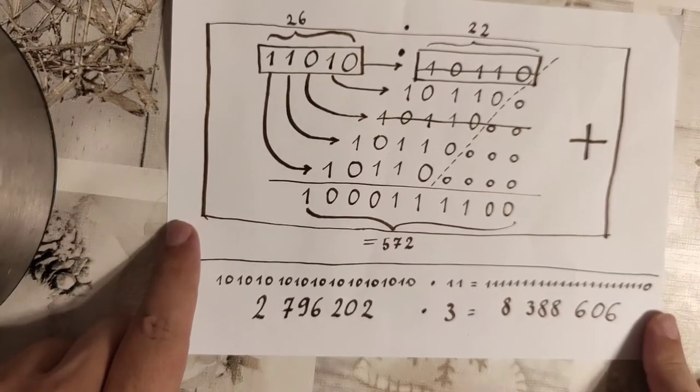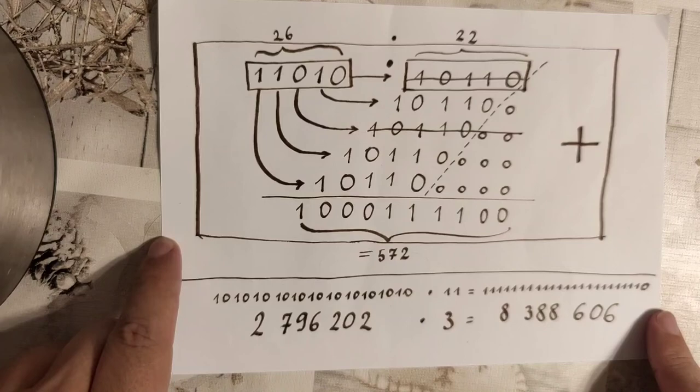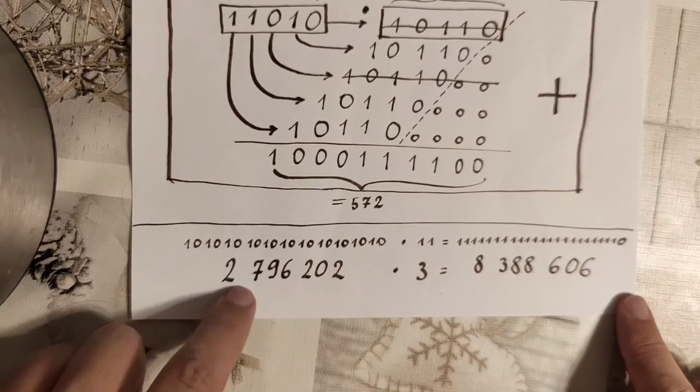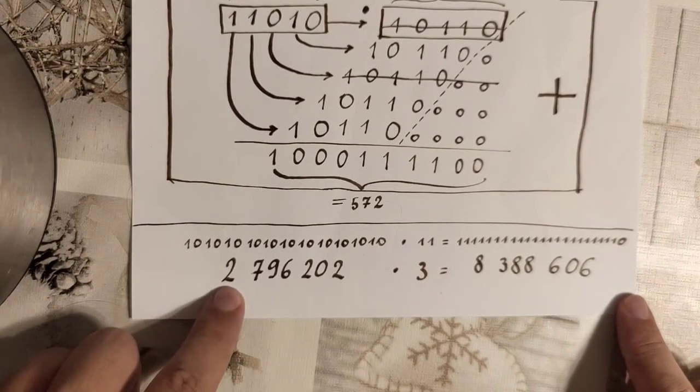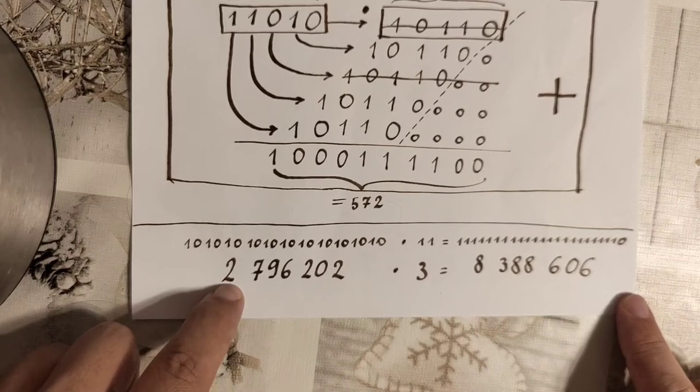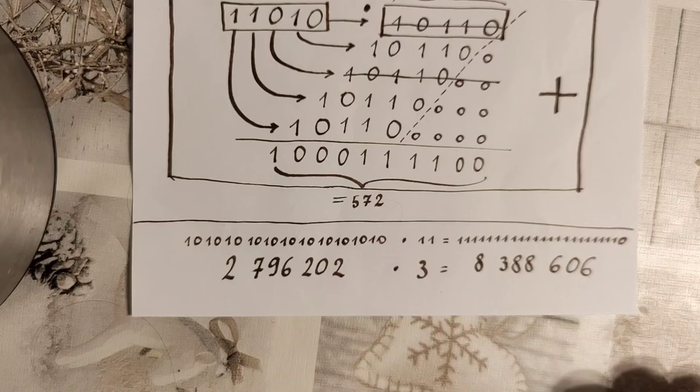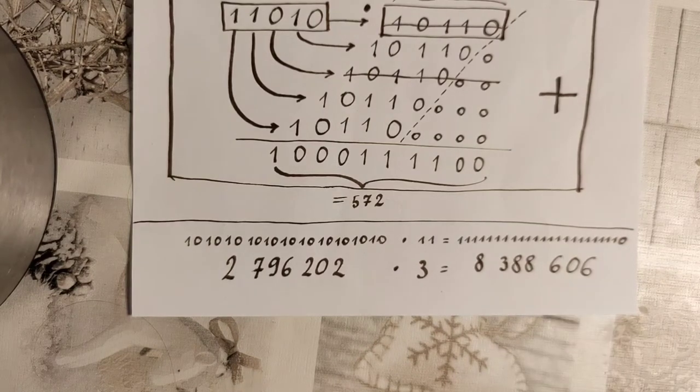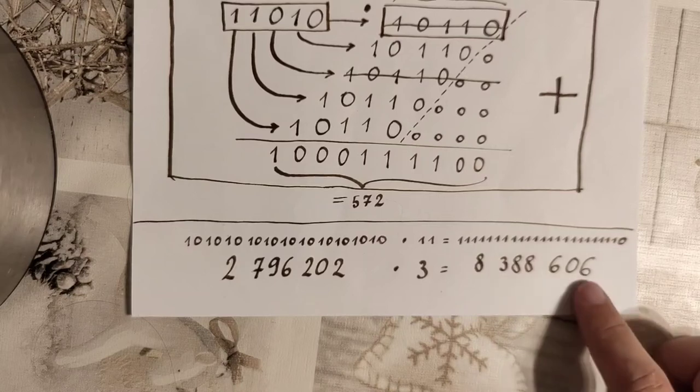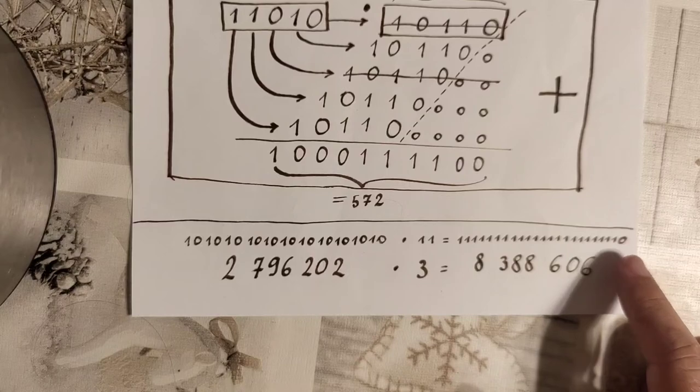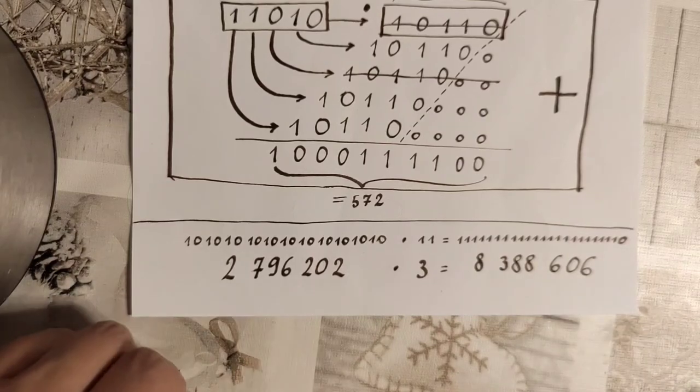Now multiplying 26 and 22 in order to get 572 is of course sort of lovely, but I have a much better proposition: multiplying 2,796,202 with 3 in order to gain 8,388,606 which is close to 607, that would be indeed the maximum number displayable in 23 bits.